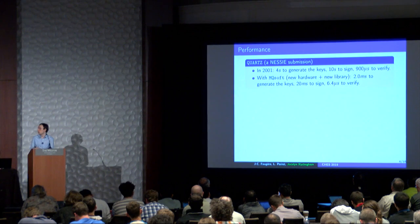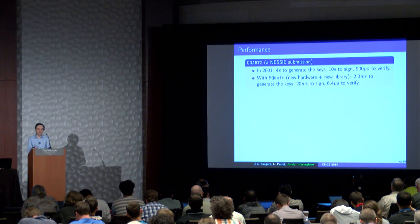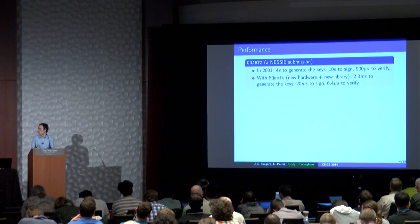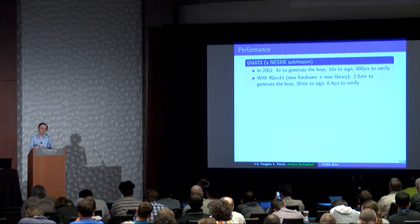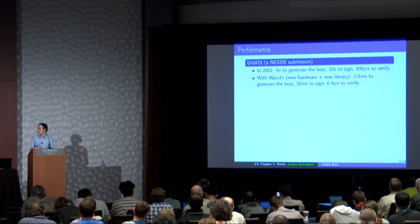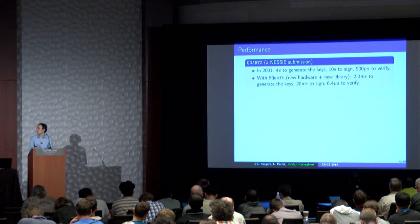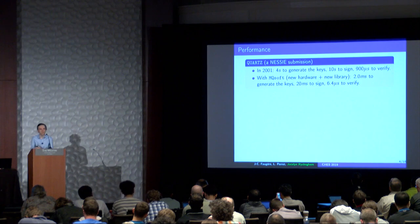For performance: for Quartz in 2001, we had 4 seconds for key generation, 10 seconds to sign, and approximately 1 millisecond to verify a signature. Today with MQSoft, with the new hardware processor but also with our implementation, we have a factor of 2,000 speedup on key generation, a factor of 500 on the signing process, and a factor of approximately 400 for the verifying process.